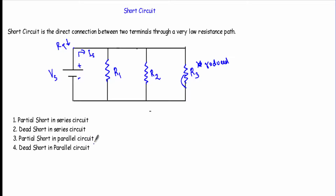Now let me talk about dead short circuit in a parallel circuit. A dead short circuit occurs when all the resistances are eliminated from the circuit, making the total resistance RT nearly equal to zero, causing an excessive amount of current to flow. If we don't use any protective device like a circuit breaker or fuse, there will be excessive damage. In this parallel circuit, if I connect terminals A and B with a very low resistance path, R1, R2, and R3 get discarded and the circuit resistance becomes nearly zero.